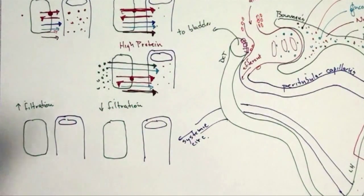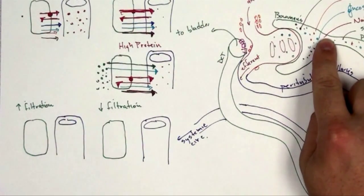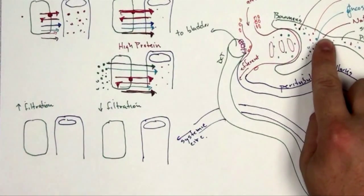What I mean by high filtration is we've really got everything over here that's smaller than a protein. That means we've got a high concentration of things over here.